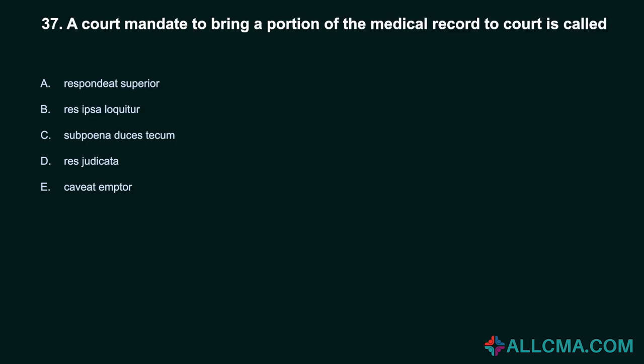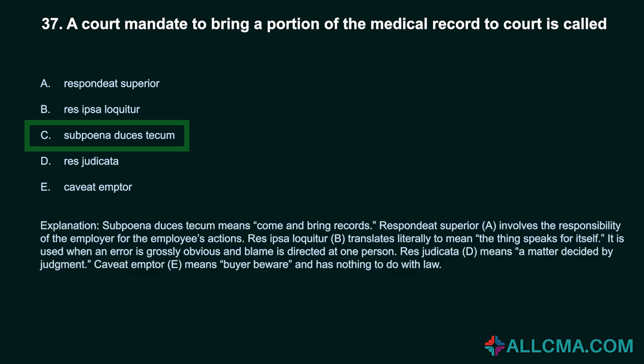Question 37: A court mandate to bring a portion of the medical record to court is called: a) respondeat superior, b) res ipsa loquitur, c) subpoena duces tecum, d) res judicata, e) caveat emptor. Correct answer: C, subpoena duces tecum. Subpoena duces tecum means 'come and bring records.' Respondeat superior involves the responsibility of the employer for the employee's actions. Res ipsa loquitur translates as 'the thing speaks for itself,' used when an error is grossly obvious. Res judicata means 'a matter decided by judgment.' Caveat emptor means 'buyer beware.'